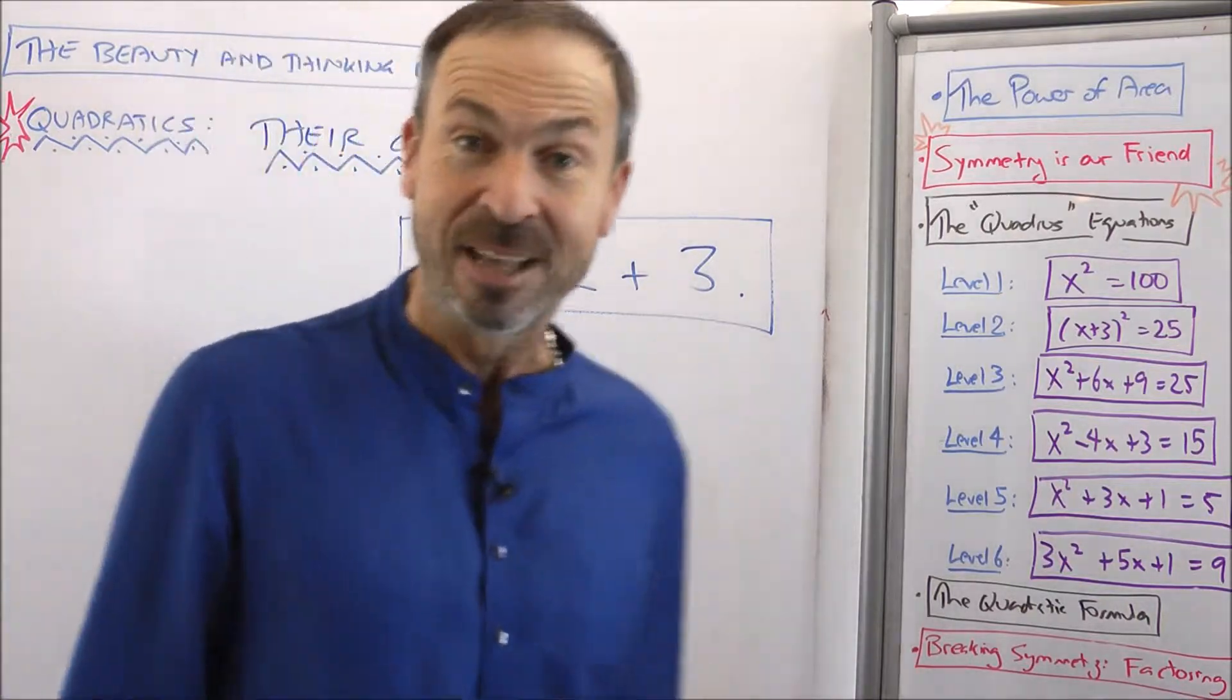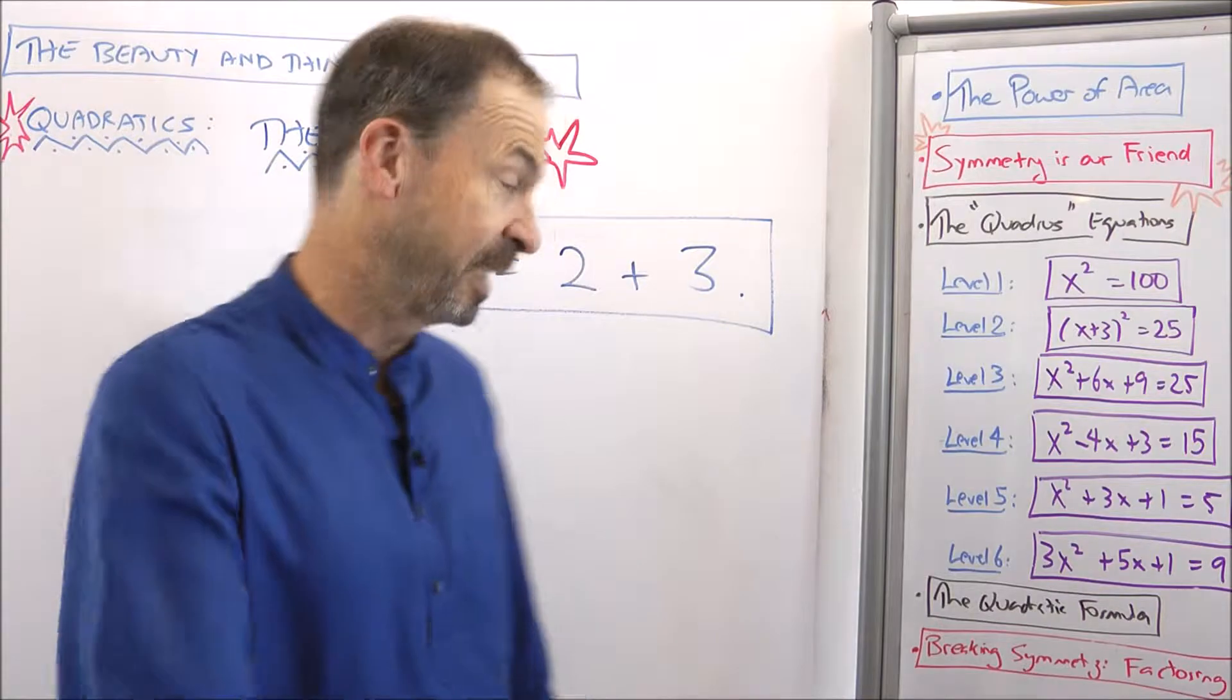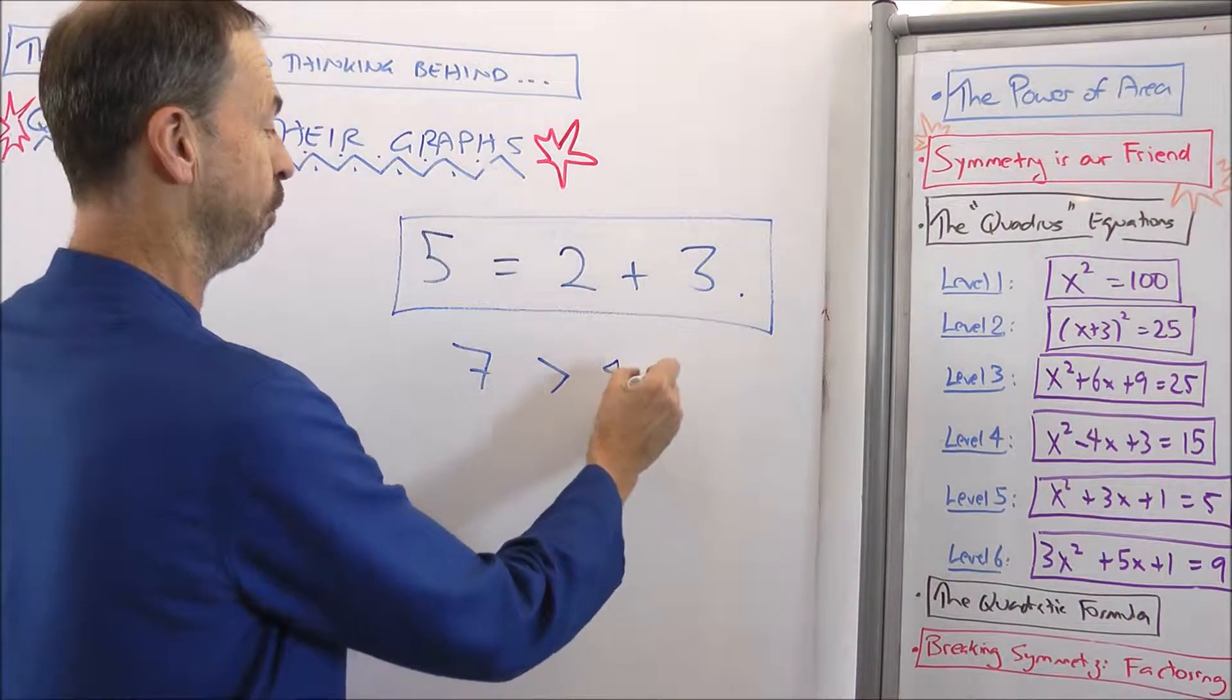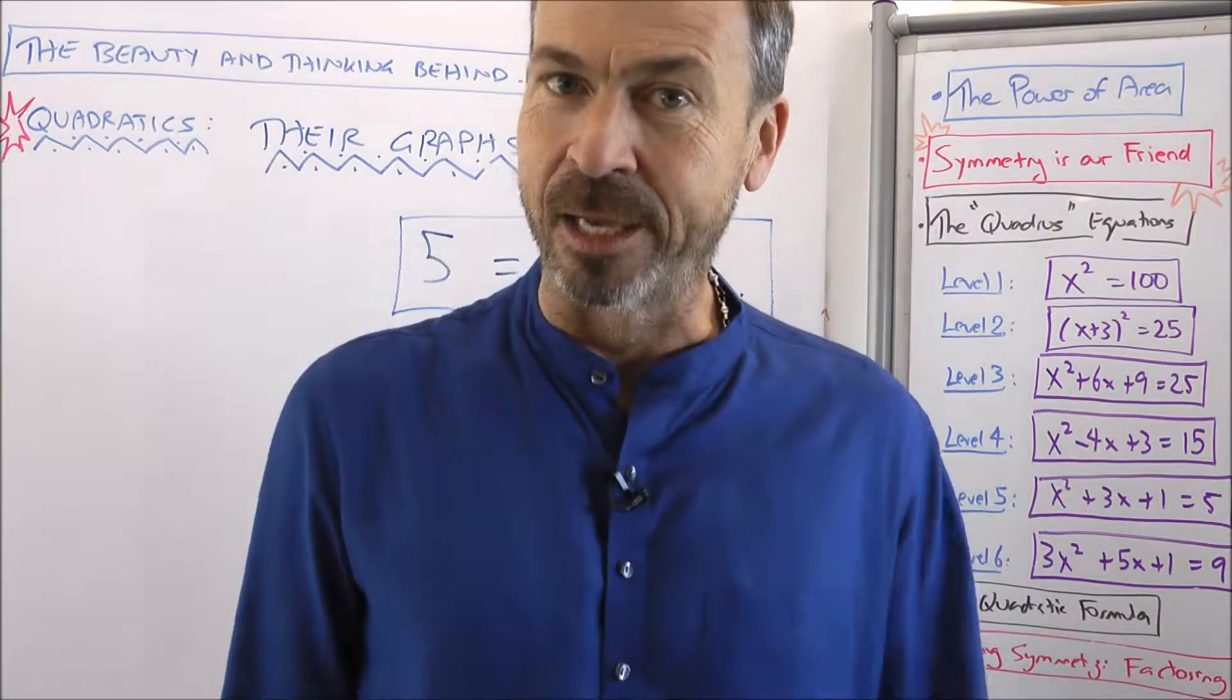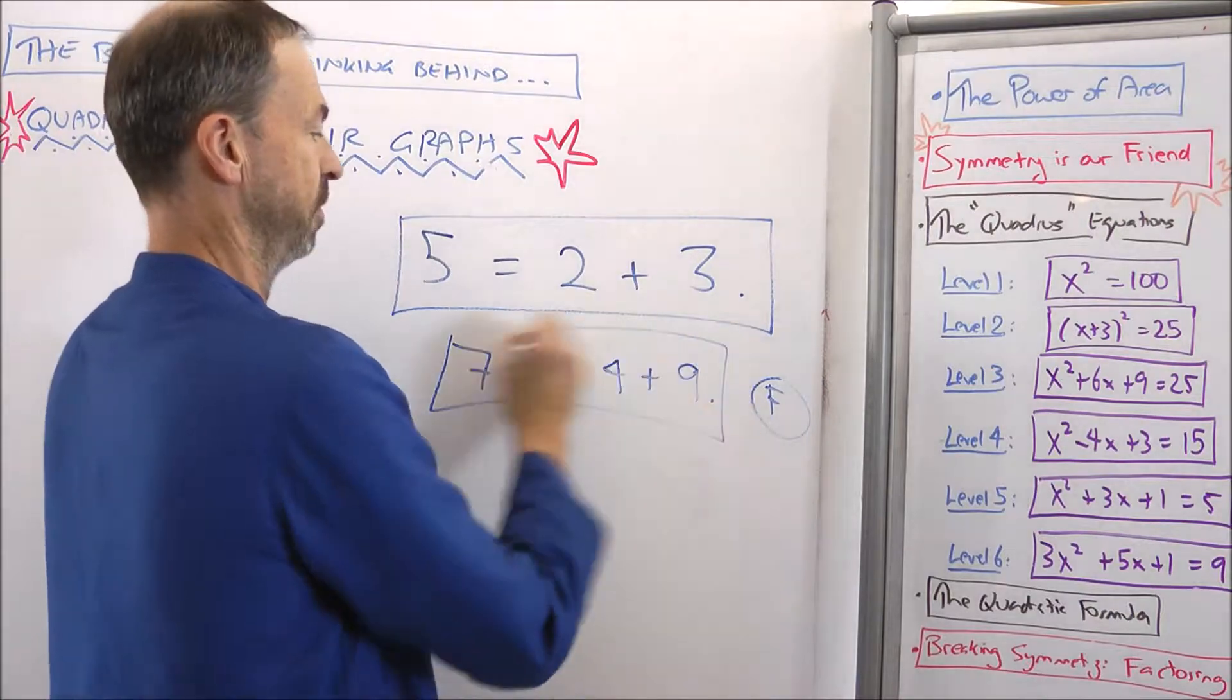That turns out to be a true sentence, because five does happen to equal two plus three. But not all sentences need to be true. For example, here's another sentence in mathematics: Seven is greater than four plus nine. That's a valid sentence, just turns out to be a false sentence.